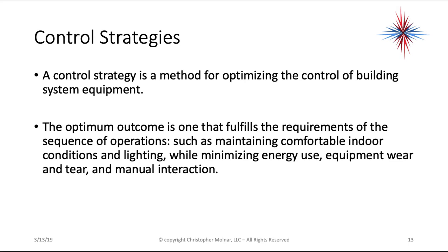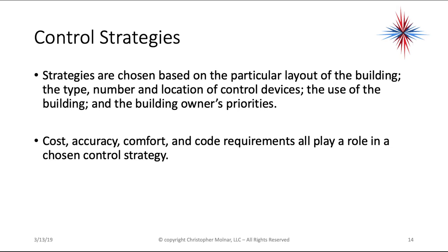A control strategy is a method for optimizing the control of a building's system equipment. The optimum outcome fulfills the sequence of operation — maintaining comfort, indoor conditions, and lighting — while minimizing energy use, equipment wear and tear, and manual interaction. Strategies are chosen based on the building layout, type and location of control devices, use of the building, and the owner's priorities. Cost, accuracy, comfort, and code requirements all play a role in the chosen control strategy.